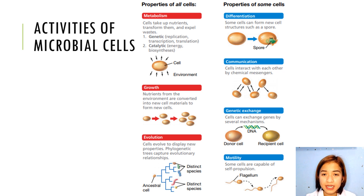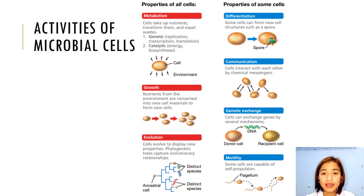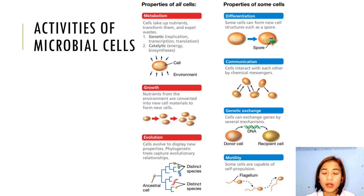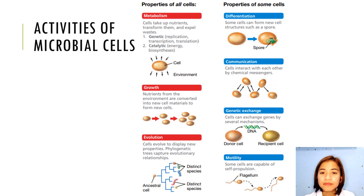Cells respond to chemical signals in their environment, including those produced by other cells of either the same or different species. These signals often trigger new cellular activities. Microbial cells thus exhibit intercellular communication — they are aware of their neighbors and can respond accordingly. Many prokaryotic cells can also exchange genes with neighboring cells, either of the same species or of different species, in the process of horizontal gene transfer.